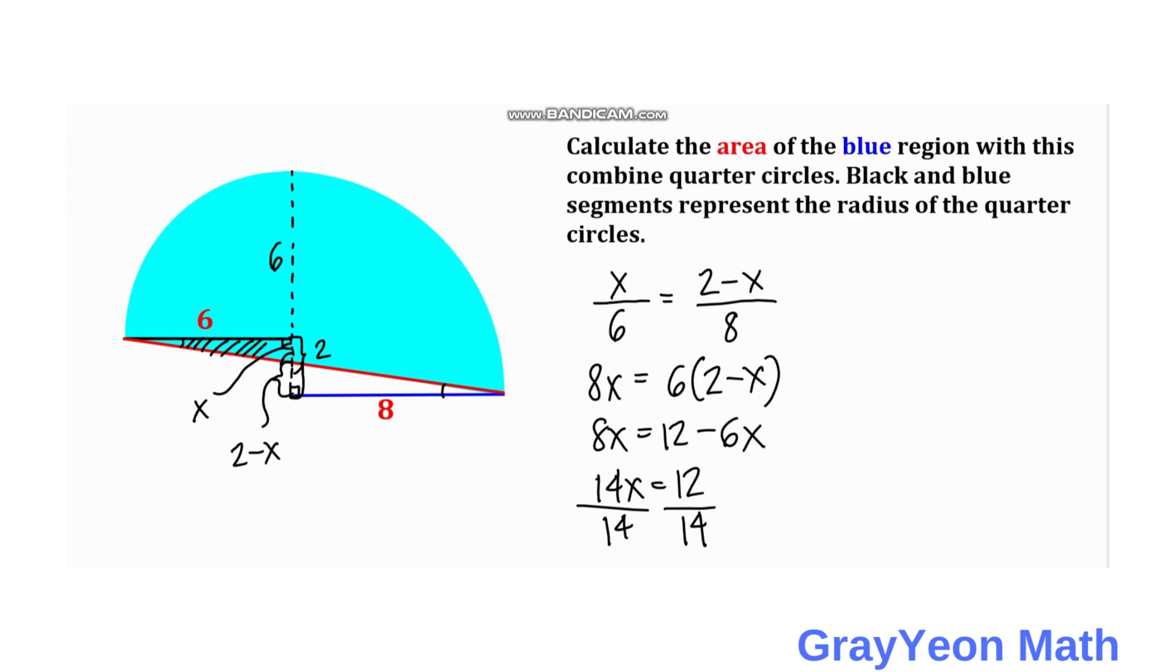This cancels and we divide by 2, so we have 6 over 7. So x equals 6/7, and 2 minus x equals 2 minus 6/7. We have 7 times 2 is 14 minus 6, that will equal 8/7 for 2 minus x.